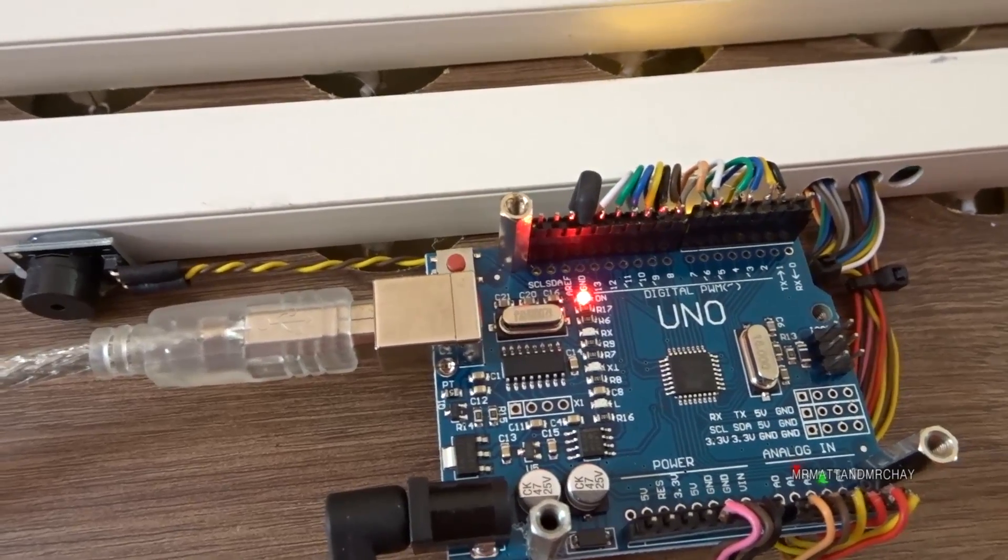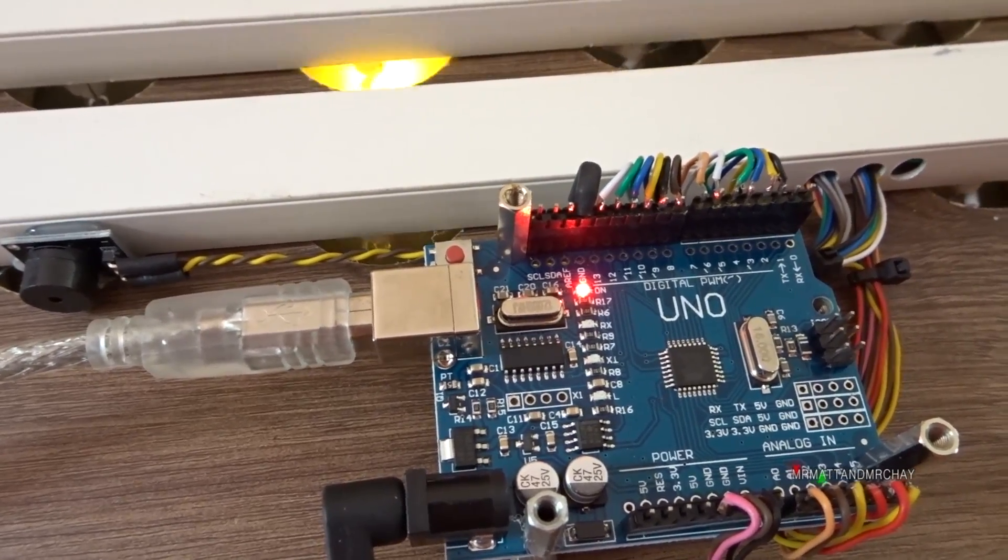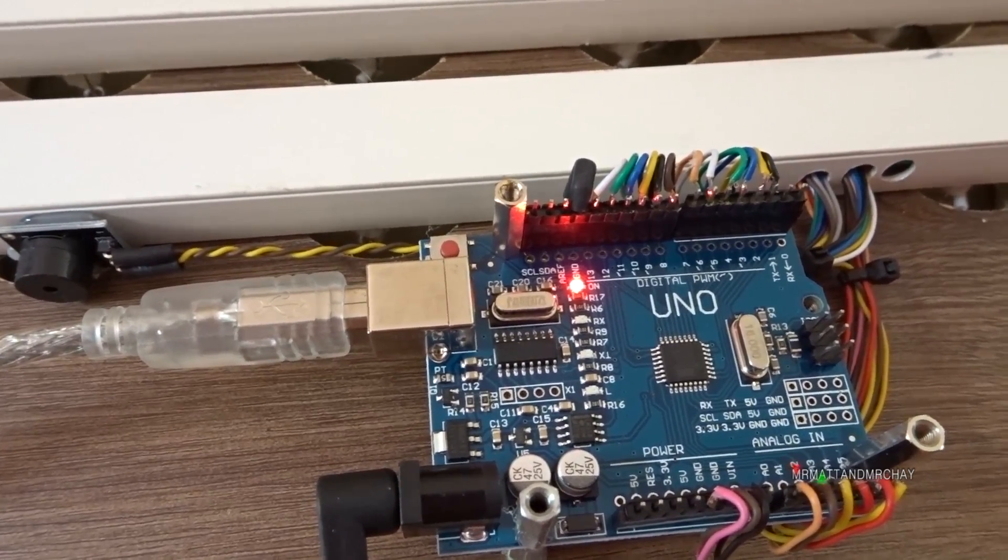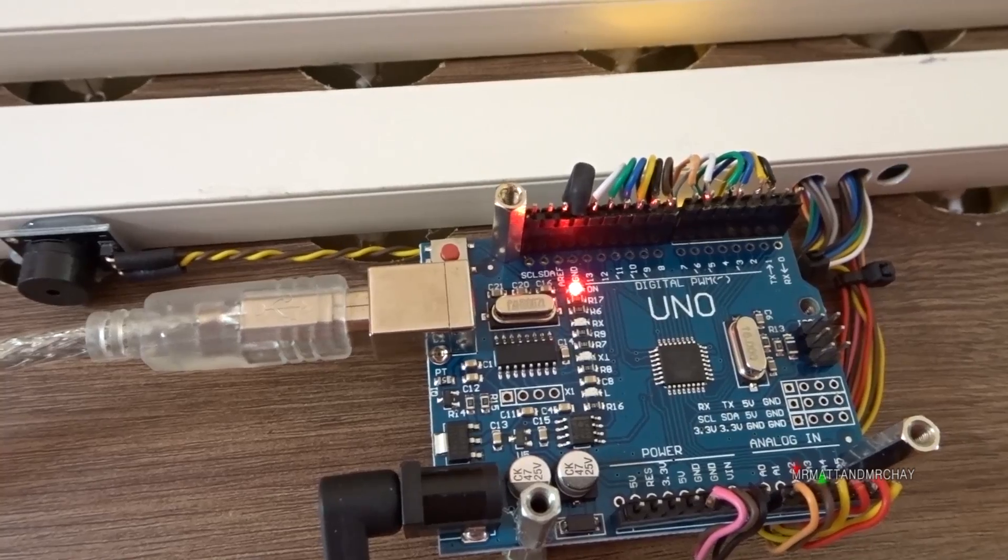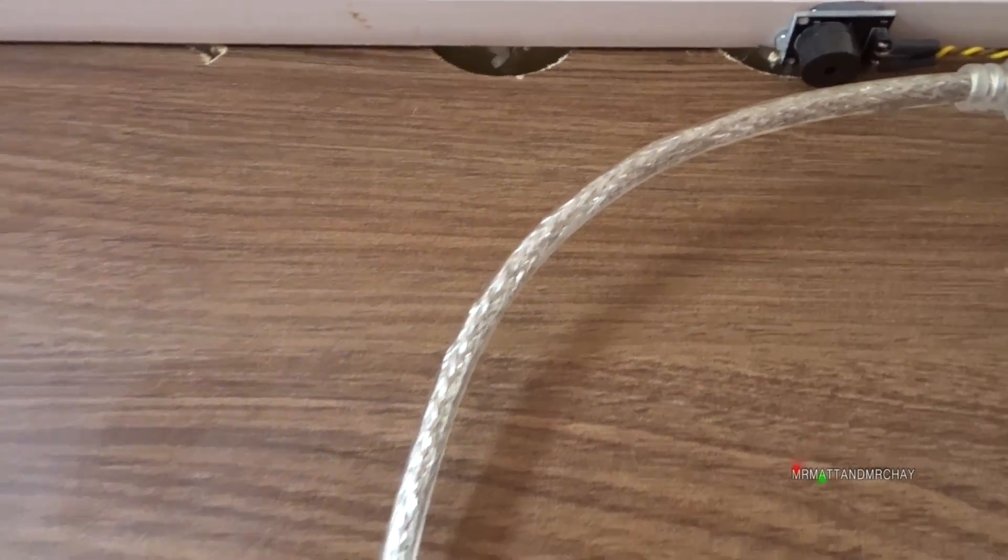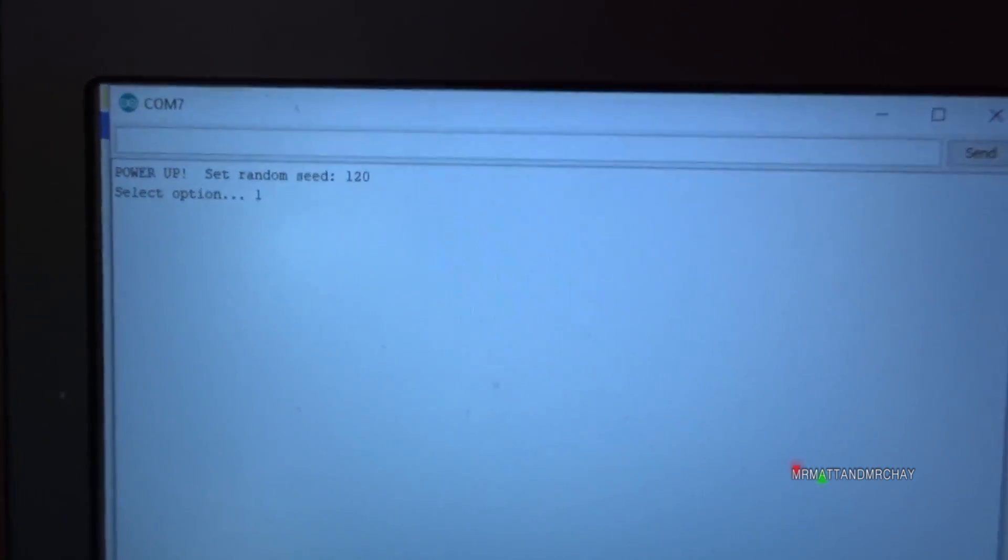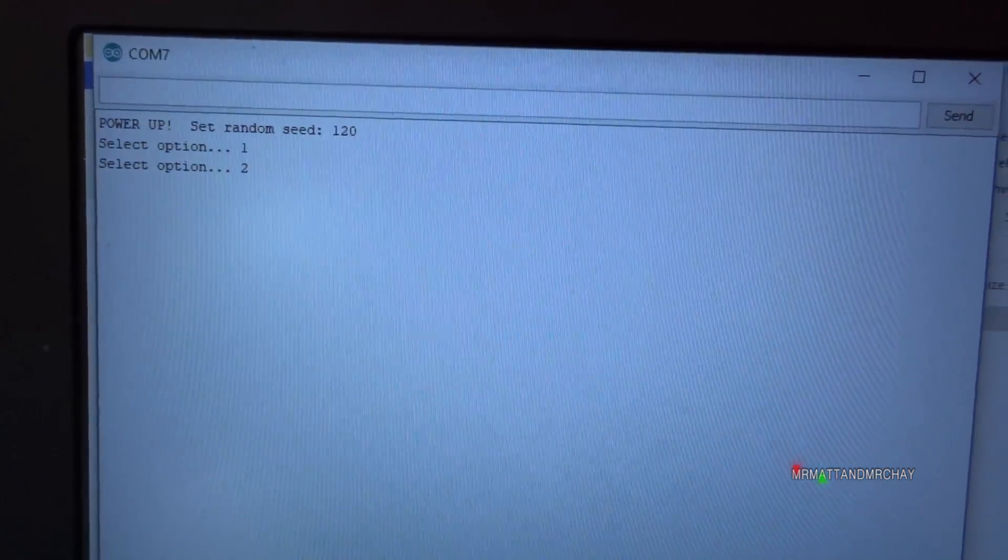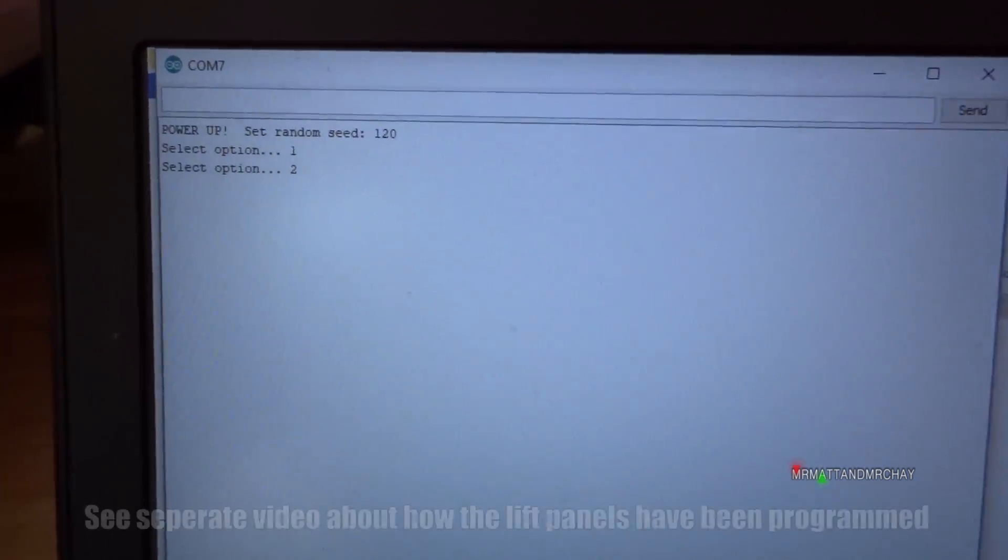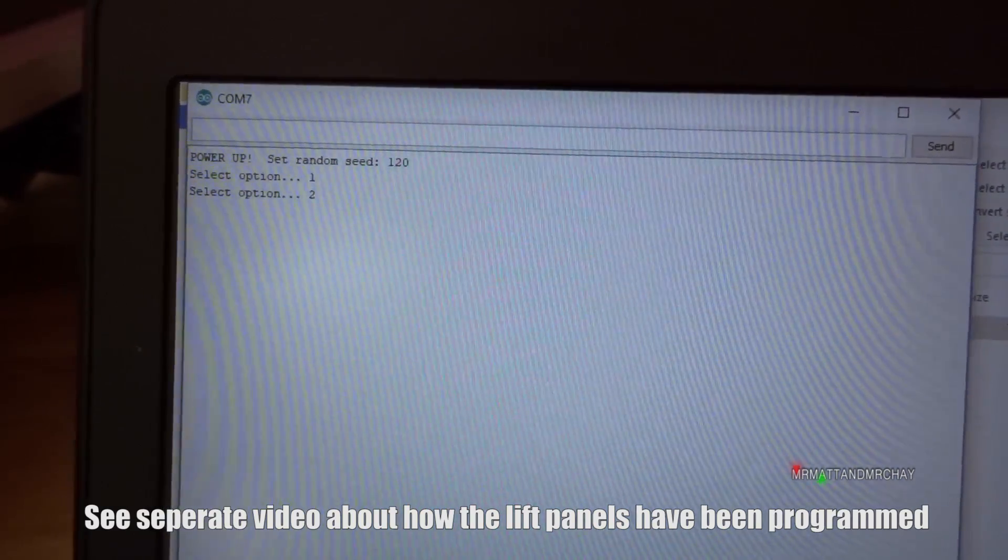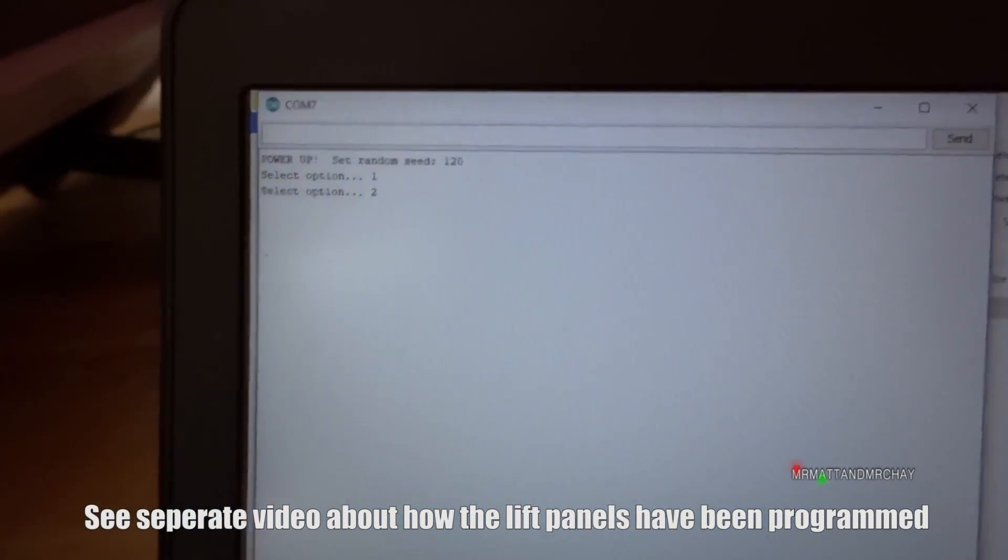I'll turn on the serial monitor, that will reboot the board as well. Now every time it does something it outputs text back down the USB cable and then it comes up on the serial monitor. It's waiting for you to select a couple of options and then it will list all it's doing.